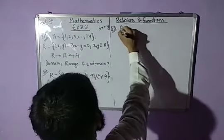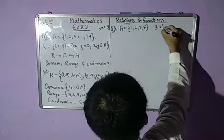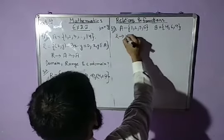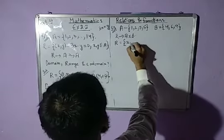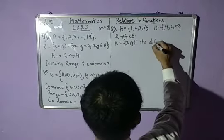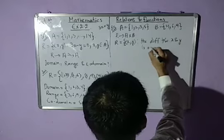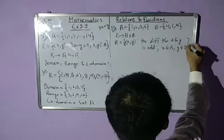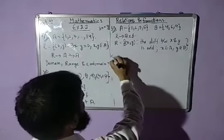Question 3: Set A is {1, 2, 3, 5} and set B is {4, 6, 9}. You are asked to find a relation R from A to B such that R is the set of all ordered pairs (x, y) where the difference between x and y is odd, x belongs to A and y belongs to B. We need to write R in roster form.